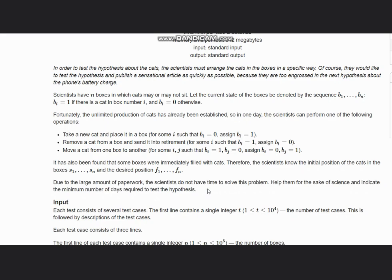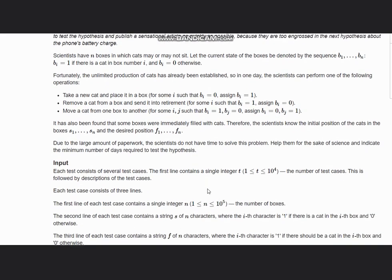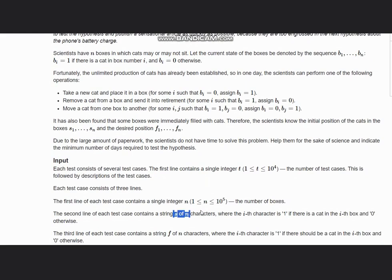So our input contains number of test cases, n the number of boxes, a string s means the initial state of the cats, and f represents the final state.